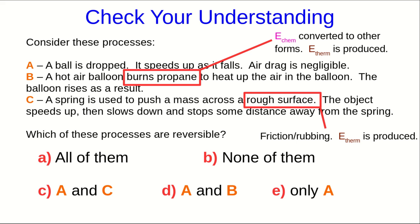In case C, we have something sliding across a rough surface. There's friction or rubbing going on, and so again things will warm up — thermal energy is being produced. On the other hand, A is a conversion from one form of mechanical energy to another: gravitational potential energy is being converted into kinetic energy. Those are both forms of mechanical energy, and transformations between forms of mechanical energy are reversible. So the answer is that only A is reversible.